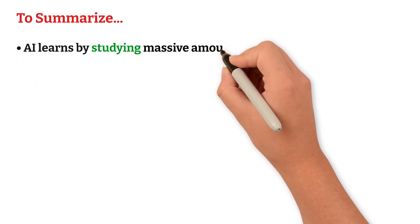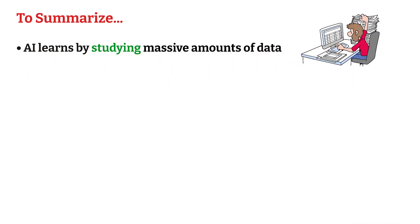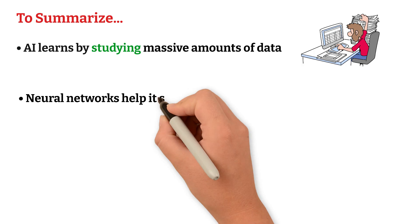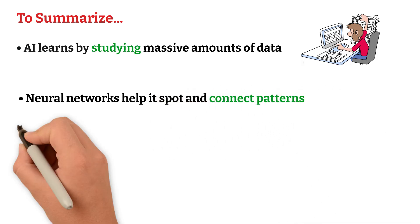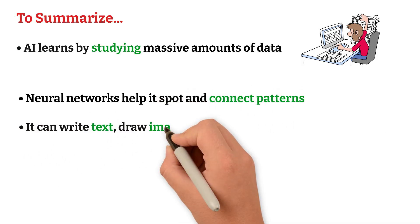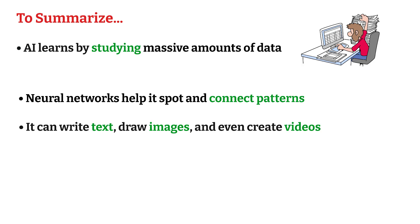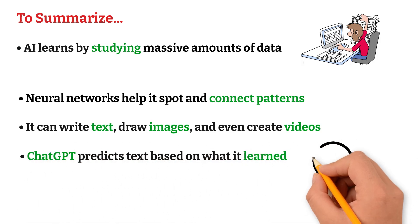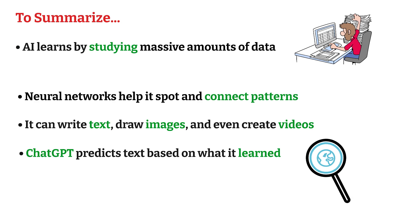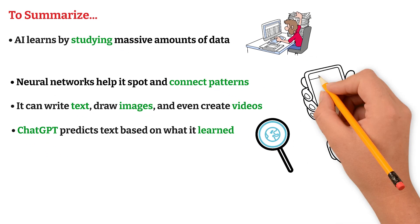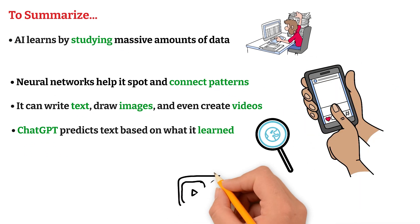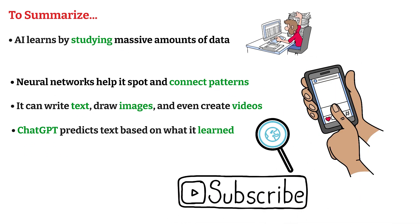So, to summarize, AI learns by studying massive amounts of data. Neural networks help it spot and connect patterns. It can write text, draw images, and even create videos. ChatGPT predicts text based on what it learned, not by searching the web. If you enjoyed this explanation, hit like, subscribe, and share it with a curious friend. Thanks for watching.